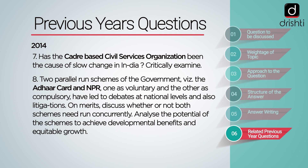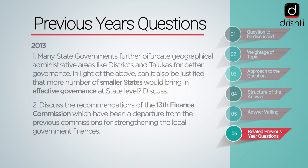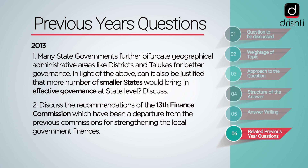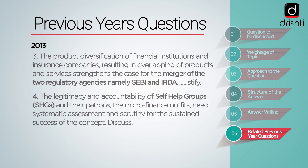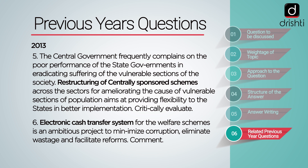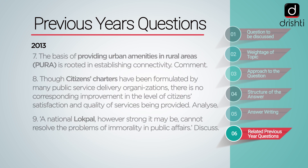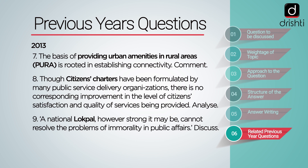In 2013, the questions were related to how smaller states can bring effective governance at the state level, merger of two regulatory agencies namely SEBI and IRDA, self-help groups, restructuring of centrally-sponsored schemes, electronic cash transfer, providing urban amenities in rural areas, citizen charters, and Lokpal. That is all for this episode. We will see you next time with a question from GS Paper 3. Stay tuned.